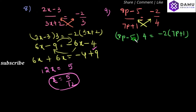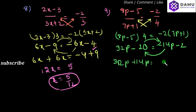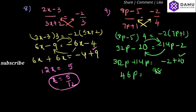Then, 8 into 4 will be 32p, minus 5 into 4 is 20. Minus 2 into 7p will come minus 14p, and minus 2 into 1 is minus 2. So, 32p — shift all variables to the left side and constants to the right side. So, 32p plus 14p will be equal to minus 2 plus 20. So, 32 plus 14 will come 46p, will be equal to 20 minus 2, which is 18. So, p will be equal to 18 by 46.